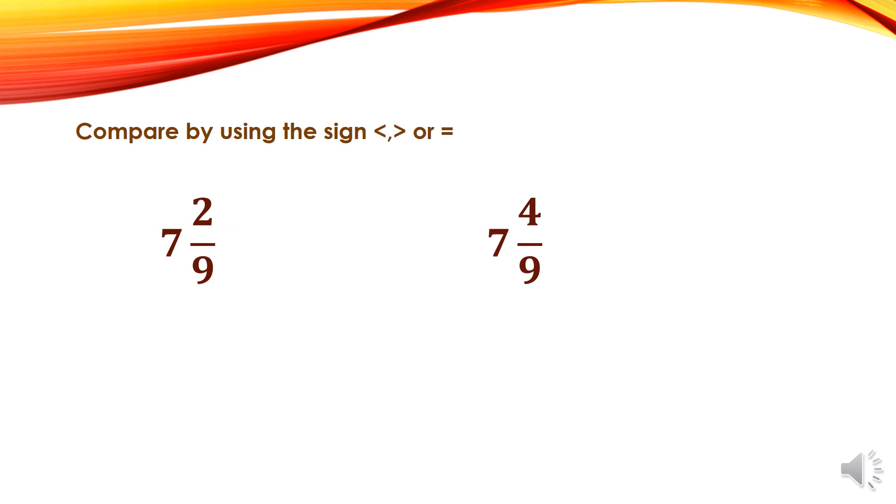Here we have the same mixed numbers, but I want to compare them by using another way. 7 and 2 over 9, 7 and 4 over 9. First of all, we have to transform them to fractions. Then I will compare them. Then 7 times 9 equals 63 plus 2, 65. And I keep the denominator as it is. Then I get 65 over 9.